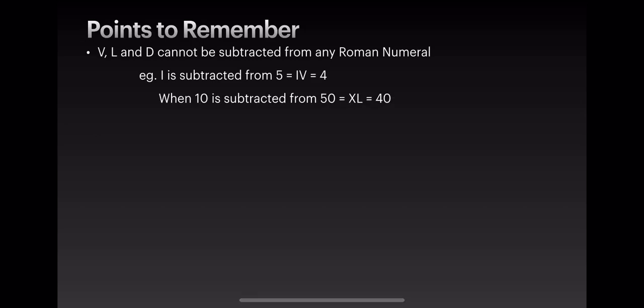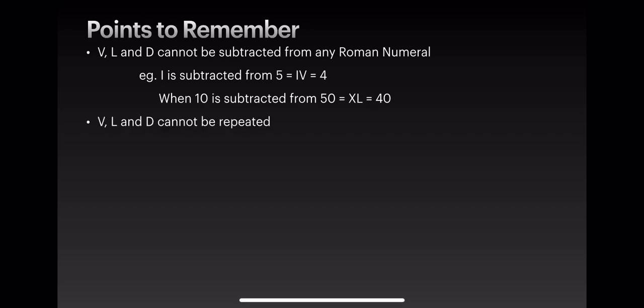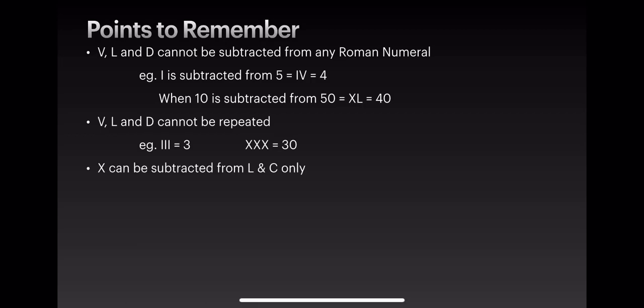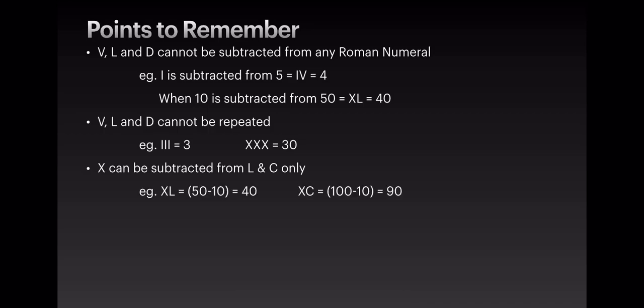50 minus 10 is 40, so XL equals 40 — when 10 is subtracted from 50, we write XL. Second rule: V, L, and D cannot be repeated. Only I and X can be repeated — III is 3, XXX is 30, and CCC is 300. X can be subtracted from L and C only: XL is 40 and XC is 90.